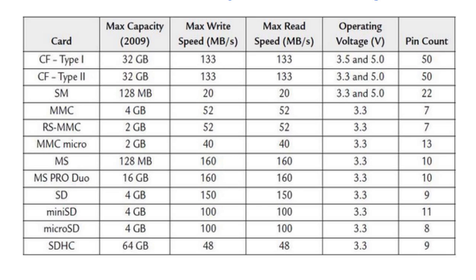This table displays some technical properties of memory cards. The SD card has a maximum capacity of 4GB, a maximum write and read speed of 150MB per second, an operating voltage of 3.3V, and 9 pins. The mini SD card also has a capacity of 4GB, read and write speed of 100MB per second, 11 pins, and operates on 3.3V. The micro SD card is similar to the mini SD card but has fewer pins — 8 pins. The SD HC card has 64GB capacity, with a speed of 48MB per second for write and read, operates on 3.3V, and has 9 pins. The new SD XC card has a capacity of up to 2TB at the moment.